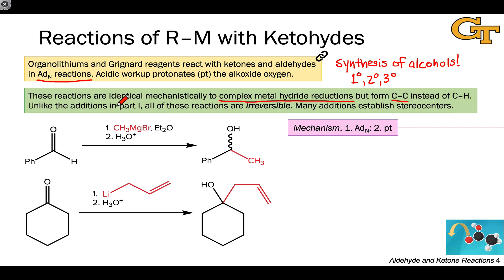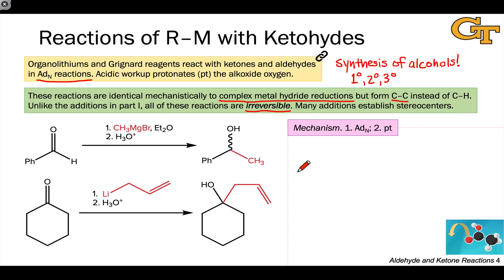Unlike the additions of heteroatomic nucleophiles that we saw in the last unit, all of these reactions are irreversible. Once we've generated the alkoxide, that is much, much more stable than the carbanion structure we started with. So the reaction stays on the product side, and we don't have to worry about Le Chatelier's principle or removing water. Many of these additions establish stereocenters, and you can see two examples of these reactions in the schemes below.